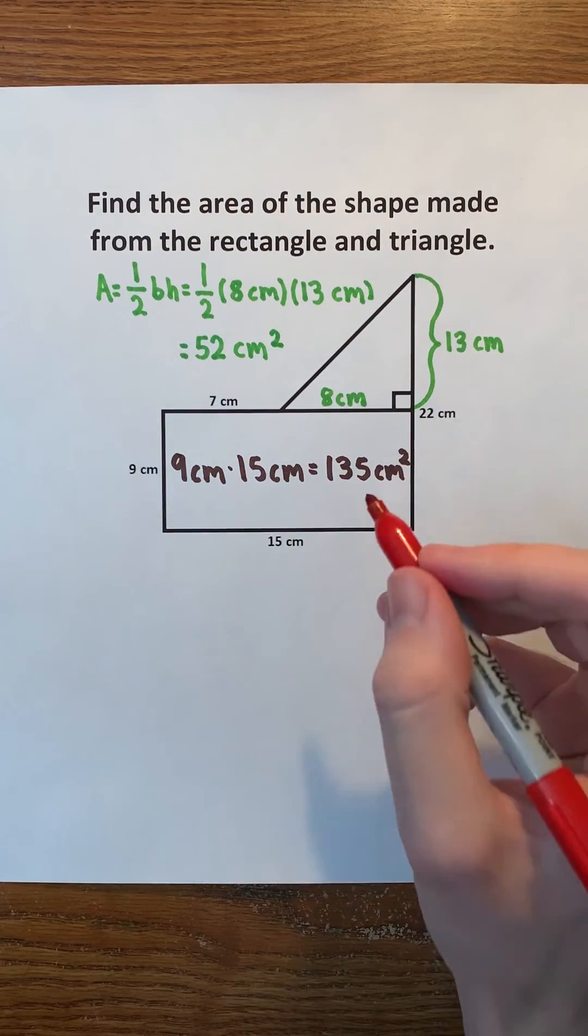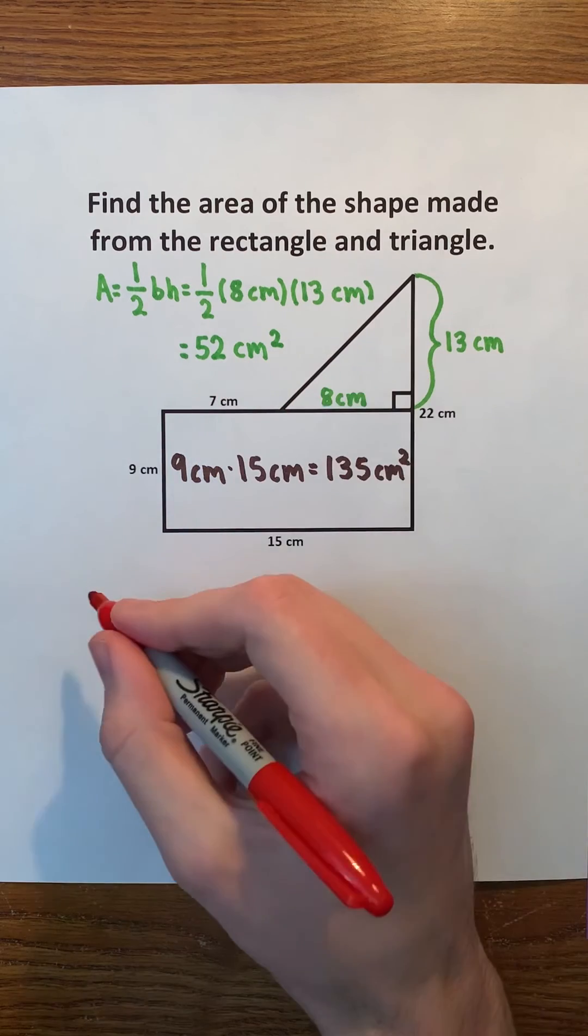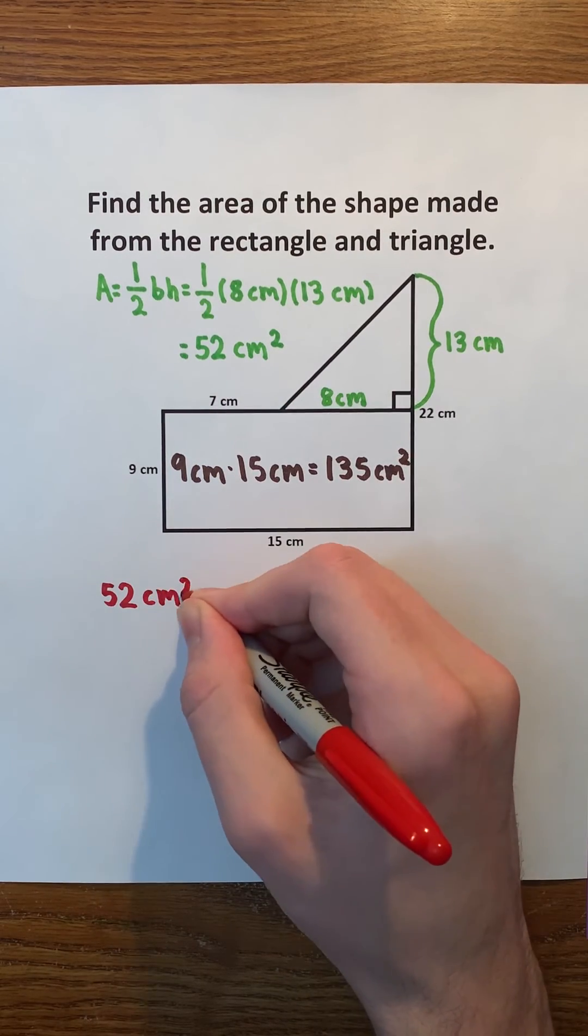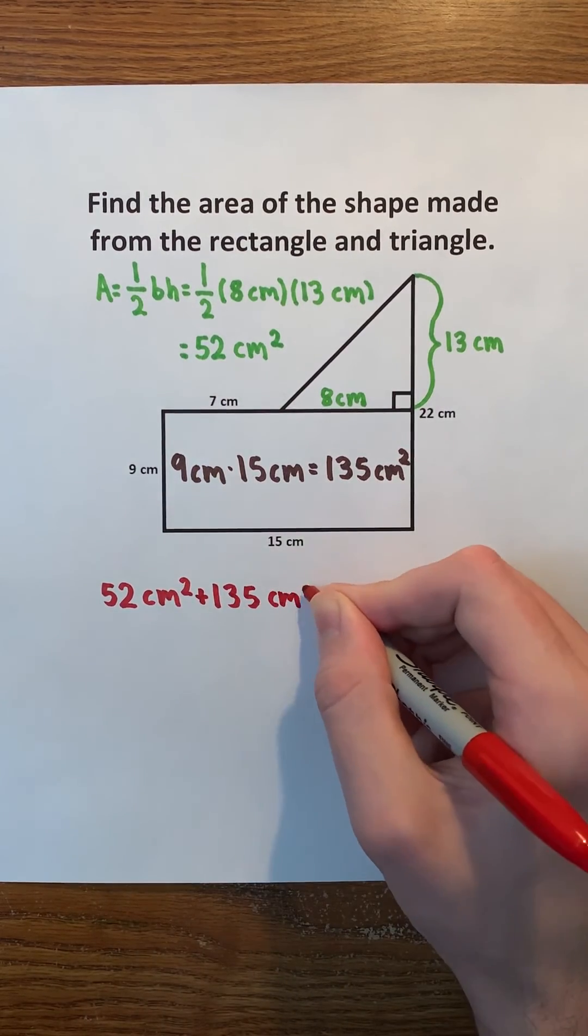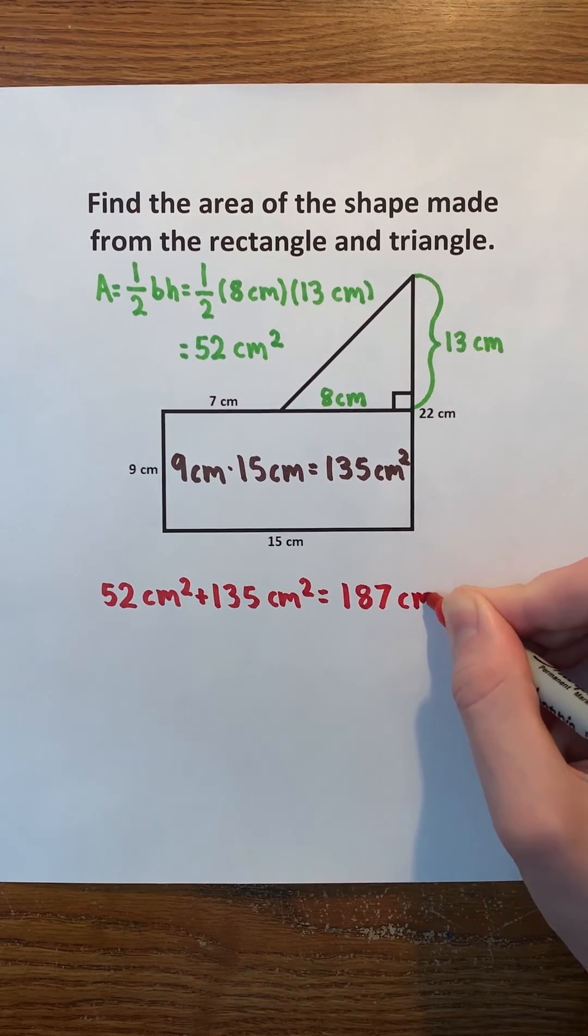Lastly, we just have to add the areas of the rectangle and triangle. 52 centimeters squared plus 135 centimeters squared is 187 centimeters squared, which must be the area of the shape.